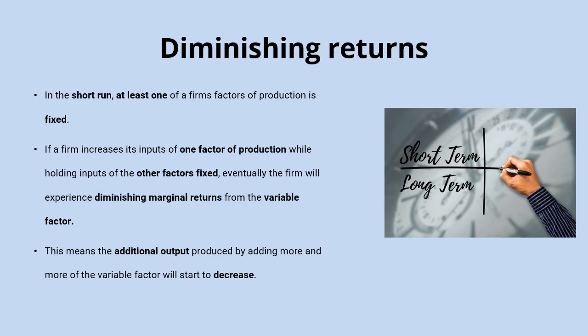You add a fifth worker, all working in that shop at the same time, still only four ovens, still only one shop. The output still increases but probably by a bit less than before. You add a sixth worker and again that additional output they can add is going to be relatively limited, certainly lower than when you added the third, fourth, or fifth member of staff. This is diminishing marginal returns, and they happen in the short run — specifically a short run concept because the shop and the number of ovens are fixed. If you could increase those as well, you wouldn't experience these diminishing marginal returns.